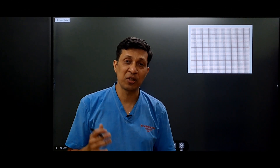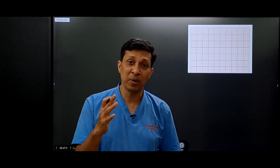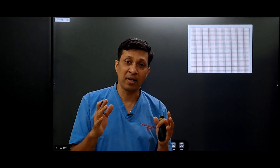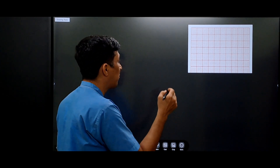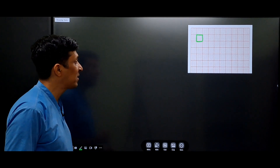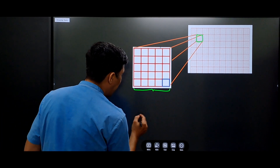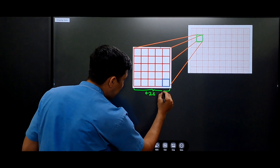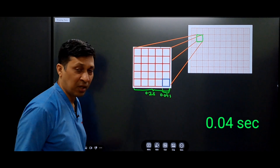Before going to the actual calculation of heart rate, let's revise some basics and do some mathematics so that it will help us understand the formulas. We all know that the ECG paper is made up of large squares, and in each large square there are certain small squares. Each large square represents a time of 0.2 seconds, and each small square represents a time of 0.04 seconds.